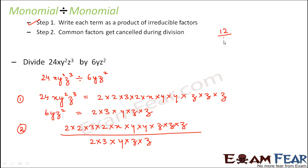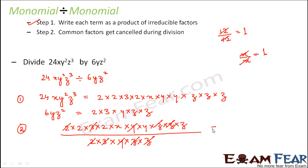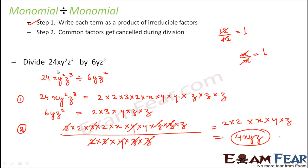For example, 12 ÷ 12 = 1, and x ÷ x = 1 — we say the numerator and denominator cancel to give 1. So here: 2 and 2 cancel, 3 and 3 cancel, y and y cancel, z and z cancel, one more z and z cancel. What are we left with? 2 × 2 × x × y × z, which equals 4xyz. That is the result of dividing these two monomials.